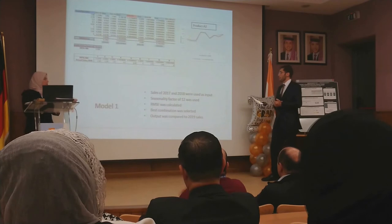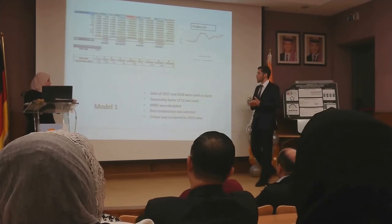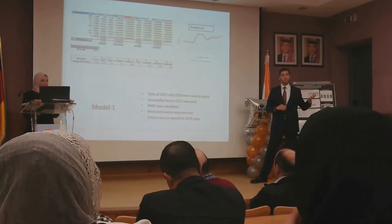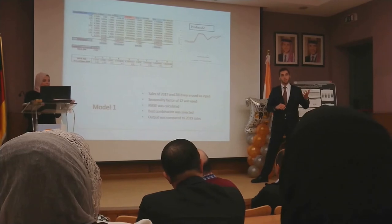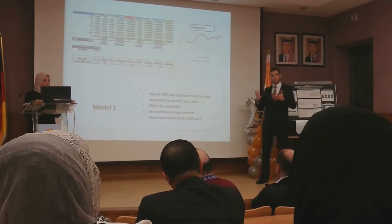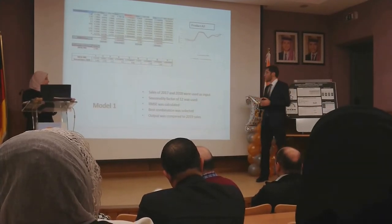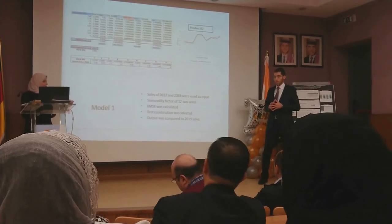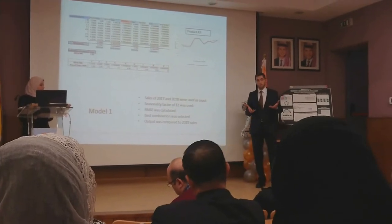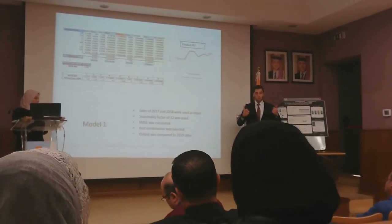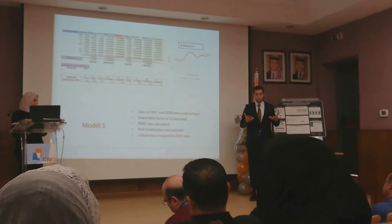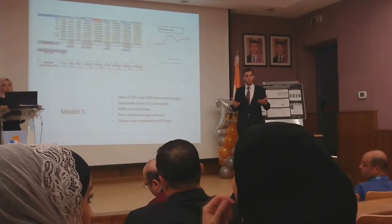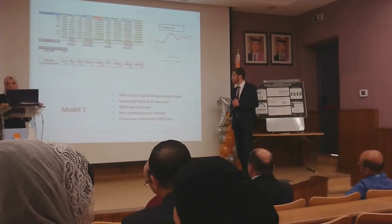We start with Company A. In this model we had the sales data from the company for 2017 and 2018, and 10 months of 2019. We used a seasonality factor of 12 because the data was collected on a monthly basis, giving us 12 data points per year.